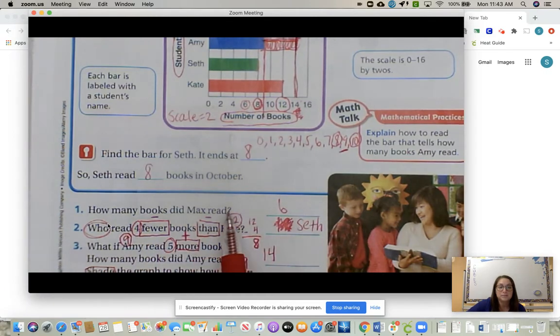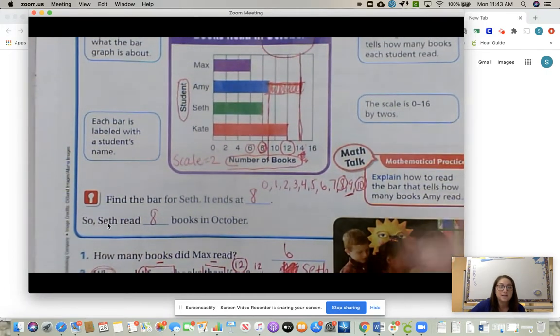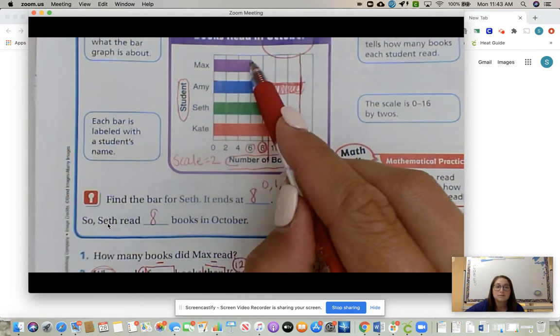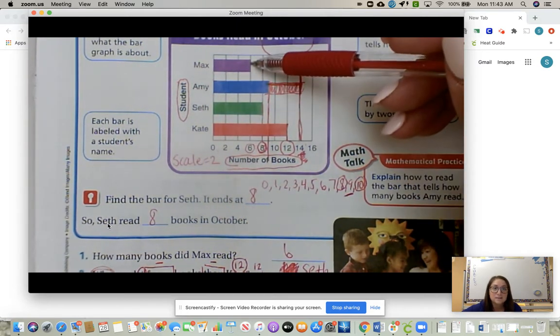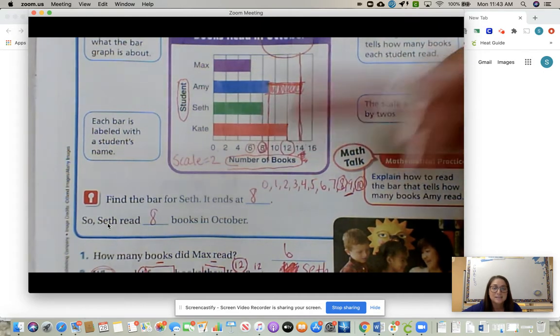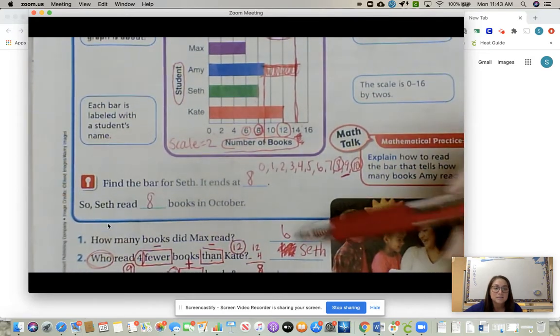How many books did Max read? So we go up to Max, we slide on over until that bar graph ends. We follow the line all the way to the bottom. That's why we circled six. So Max read six books.